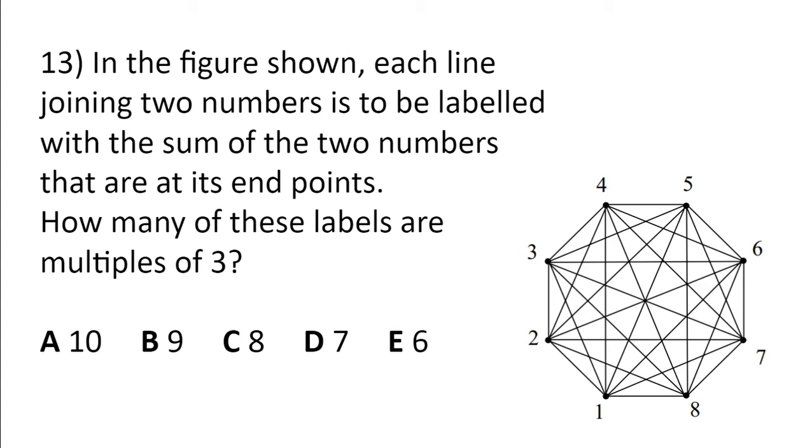So we will look at each multiple of 3 in turn and find how many pairs sum to this number. So for 3, there's 1 pair: 1 and 2.